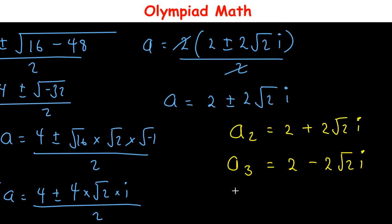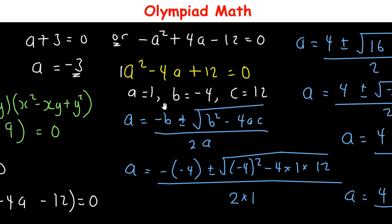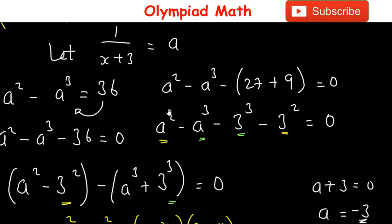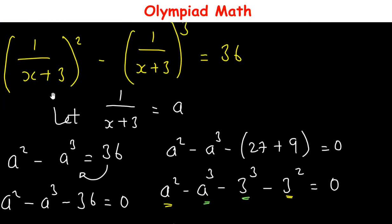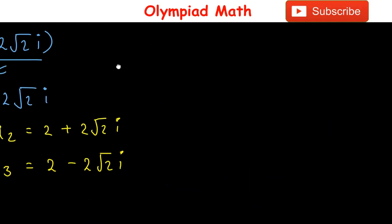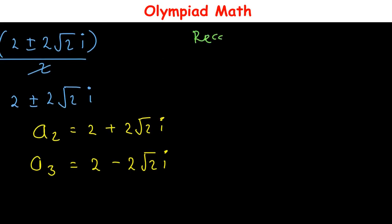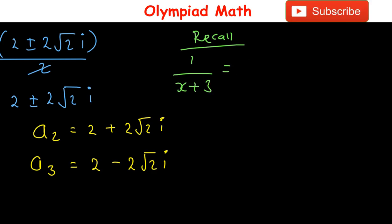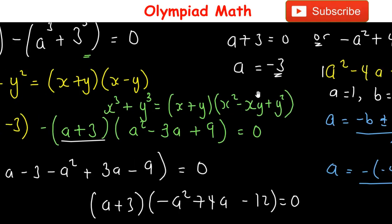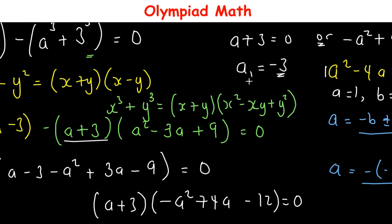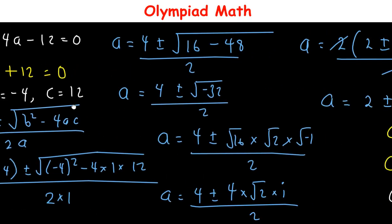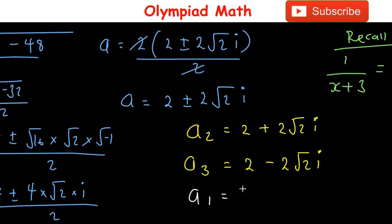Now we solve for x. Recall that 1/(x+3) = a. The first value is a₁ = -3.